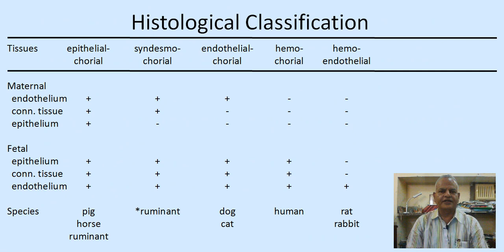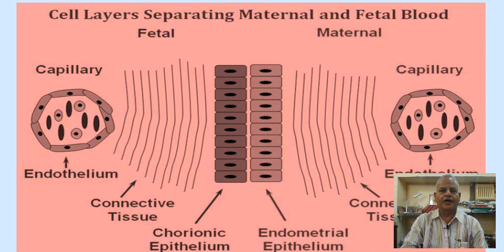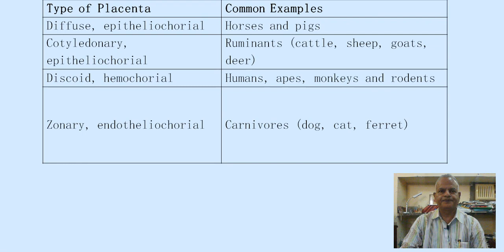The histological classification of the placenta includes epitheliochorial, synepitheliochorial, endotheliochorial, hemochorial, and hemoendothelial types. Hemochorial is seen in humans and rabbits. Epitheliochorial is seen in pigs, horses, and ruminants. Synepitheliochorial is specific to the ruminant species. Endotheliochorial is seen in dogs and cats. This classification is based on the interface of maternal and fetal tissues. In all cases, fetal and maternal blood do not mix. Examples: diffuse epitheliochorial in horses and pigs; cotyledonary epitheliochorial in ruminants; discoid hemochorial in humans, apes, monkeys, and rodents; zonary endotheliochorial in dogs, cats, and ferrets.